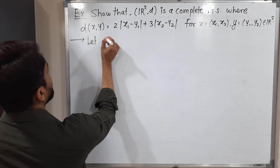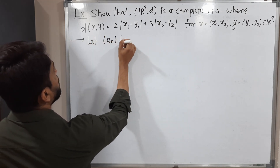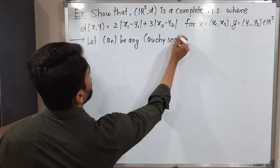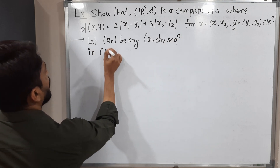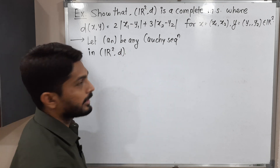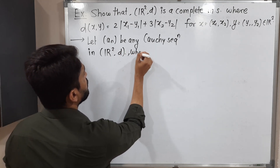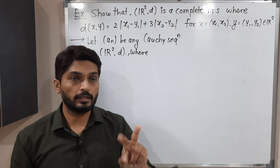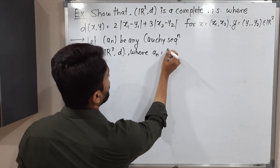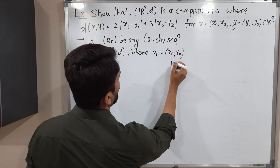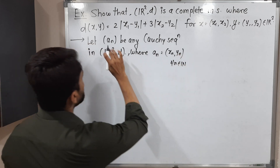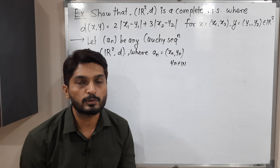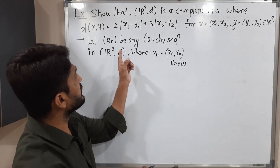Let {Nₙ} be any Cauchy sequence in ℝ² with metric D. Each term of {Nₙ} has two components, so we write Nₙ = (xₙ, yₙ) for all n belonging to the set of natural numbers. That means each term will look like (xₙ, yₙ), where the first component is xₙ and the second component is yₙ. So it is a Cauchy sequence.